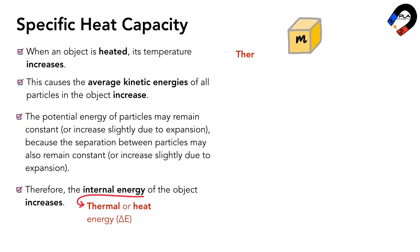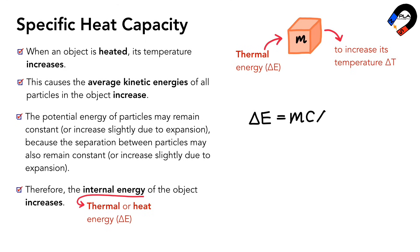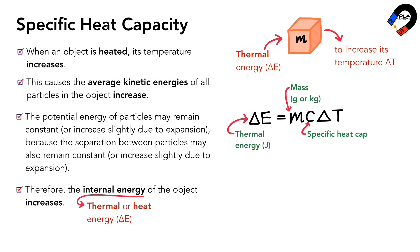The thermal energy ΔE added to an object of mass m to increase its temperature ΔT can be written as the equation ΔE = mcΔT, where ΔE is the thermal energy in joules, m is the mass in grams or kilograms, c is the specific heat capacity of the substance in joules per gram degree Celsius or joules per kilogram degree Celsius, and ΔT is the change in temperature in degrees Celsius or Kelvin.